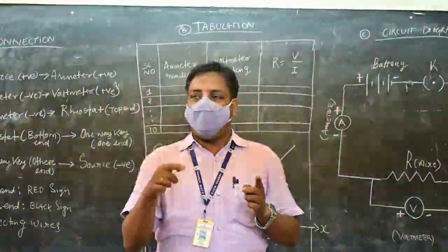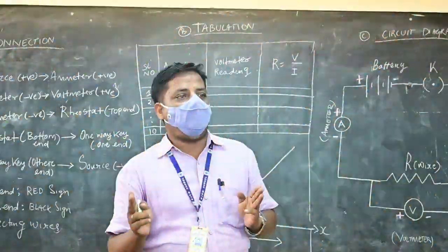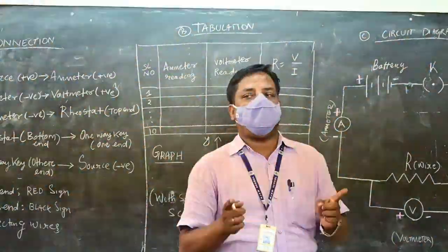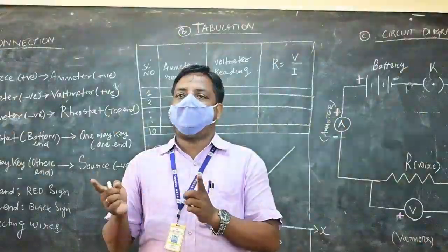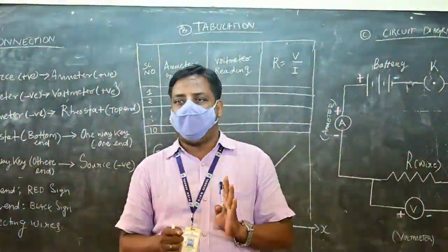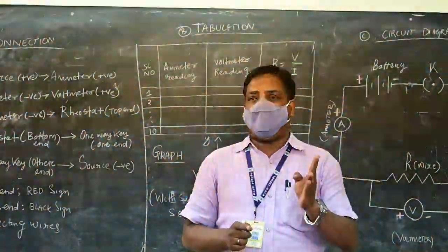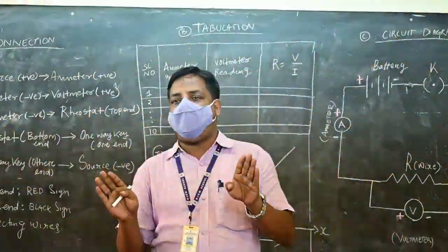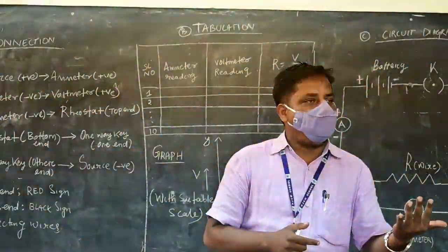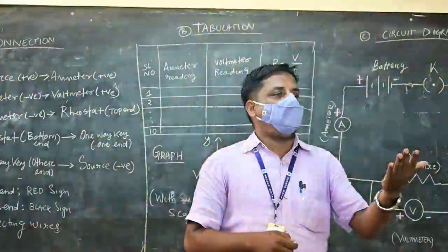Most importantly, you also have to appear for the practical exam twice. Earlier you appeared once; here you have to appear twice — one for terminal one and the other for terminal two. As per the guideline, you have to maintain at least four experiments and three activities in your record. The experiment copy is separate and the activity copy is separate. Which four experiments and which three activities to be written will be communicated through the WhatsApp group.